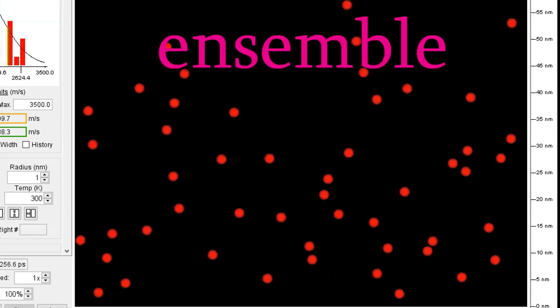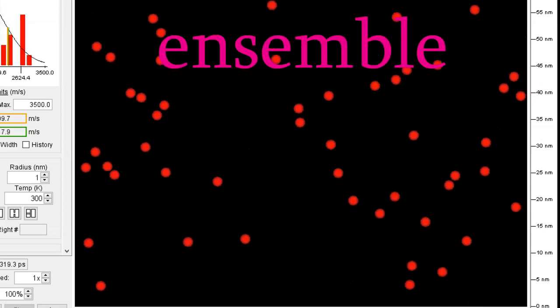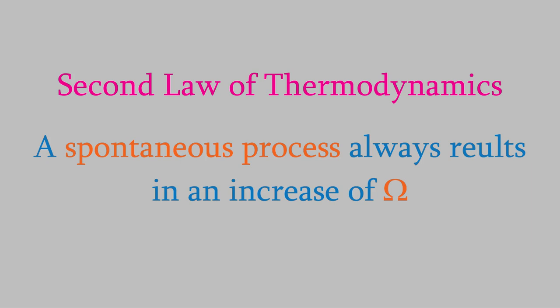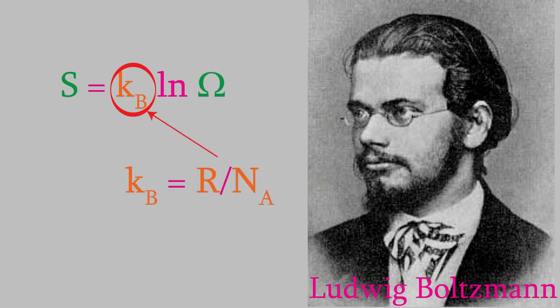For example, let's think about the entropy of a system. You might recall from the previous video in the Physical Chemistry 1 course that the second law of thermodynamics states that a spontaneous process always results in an increase in the value of omega, the number of microstates in the ensemble. This idea was first proposed by Ludwig Boltzmann, who used it to suggest a definition of entropy. kb is the Boltzmann constant, equal to R, the gas law constant, divided by Avogadro's number.